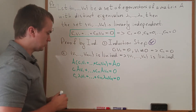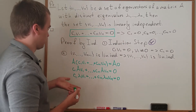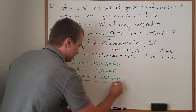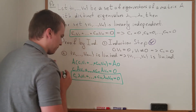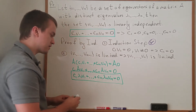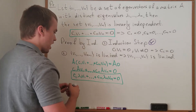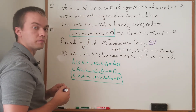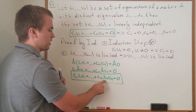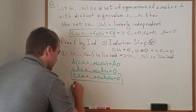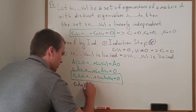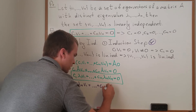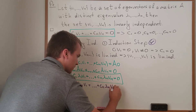So now I have two expressions: the original c1·v1 + ... + cn·vn = 0, and the new one c1·λ1·v1 + ... + cn·λn·vn = 0. The trick is to multiply the original expression by λn, giving c1·λn·v1 + ... + cn·λn·vn = 0.